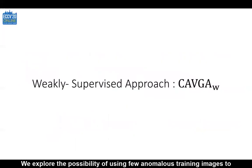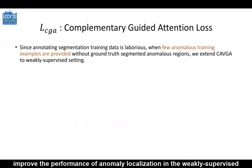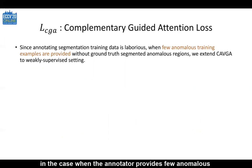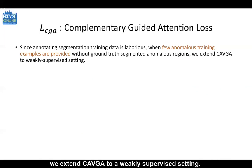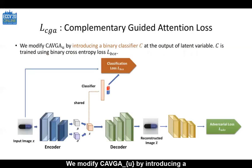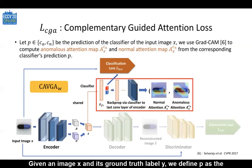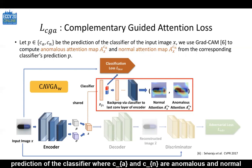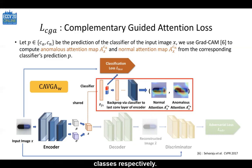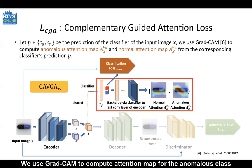We explore the possibility of using few anomalous training images to improve the performance of anomaly localization in the weakly supervised setting. Since annotating segmentation training data can be laborious, in the case when the annotator provides few anomalous training images without ground truth segmented anomalous regions, we extend CAVGA to a weakly supervised setting. We modify CAVGA-U by introducing a binary classifier C at the output of Z, and train the classifier using binary cross entropy loss. Given an image X and its ground truth label Y, we define P as a prediction of the classifier, where CA and CN are anomalous and normal classes respectively. We use GradCam to compute the attention map for the anomalous class and the attention map for the normal class on the normal image.